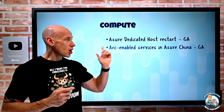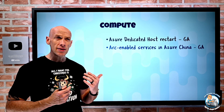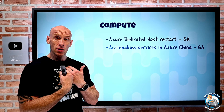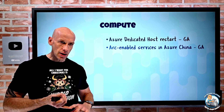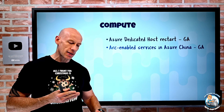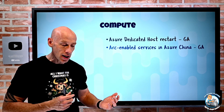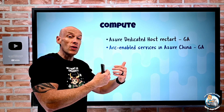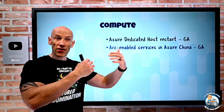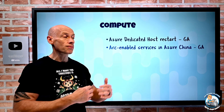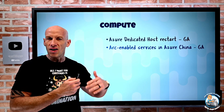Arc enabled servers is now available in Azure China. Arc enabled brings the Azure control plane outside of Azure — could be on-premises or other clouds. This includes things like policy, inventory, tagging, role-based access control, monitoring, update management, automation, various extensions, and services like Defender. Those Arc enabled servers — virtual or physical, Windows or Linux — are now available in Azure China Cloud as well as Gov and commercial.